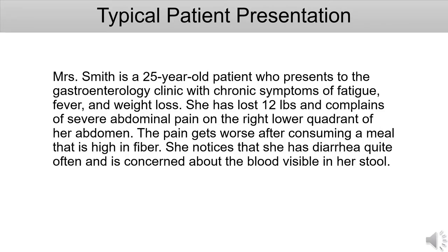Typical patient presentation. Mrs. Smith is a 25-year-old patient who presents to the gastroenterology clinic with chronic symptoms of fatigue, fever, and weight loss. She has lost 12 pounds and complains of severe abdominal pain in the right lower quadrant of her abdomen. The pain gets worse after consuming a meal that is high in fiber. She notices that she has diarrhea quite often and is concerned about the blood visible in her stool.